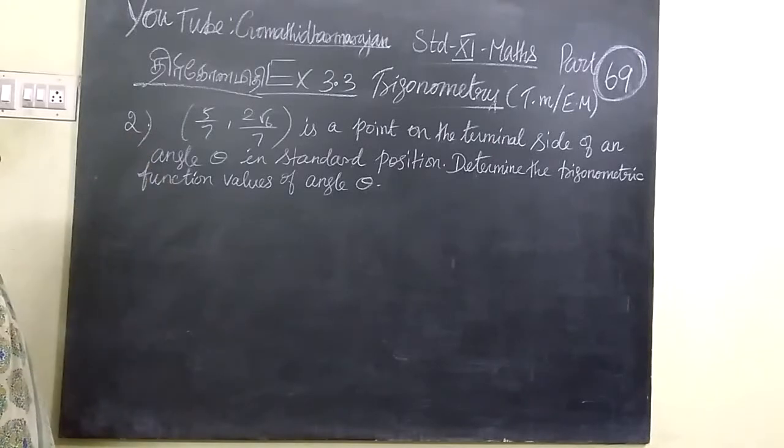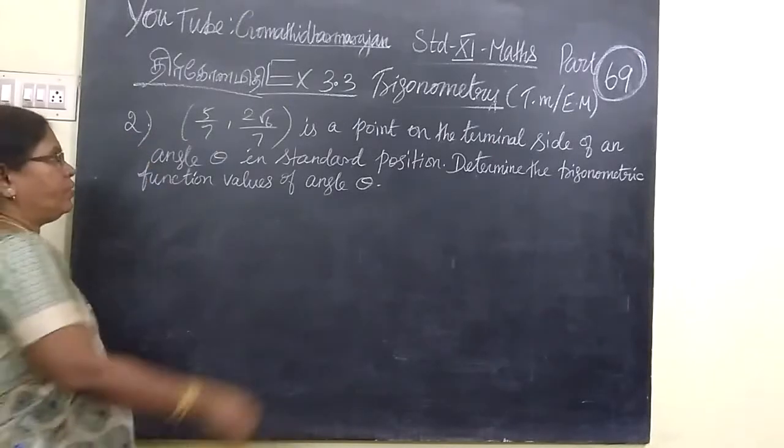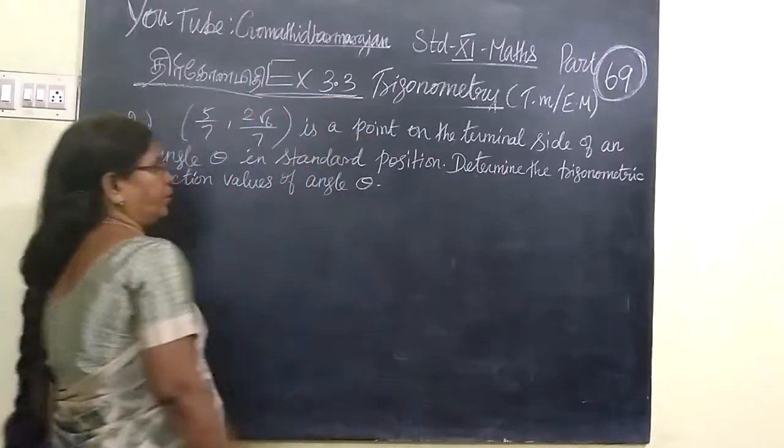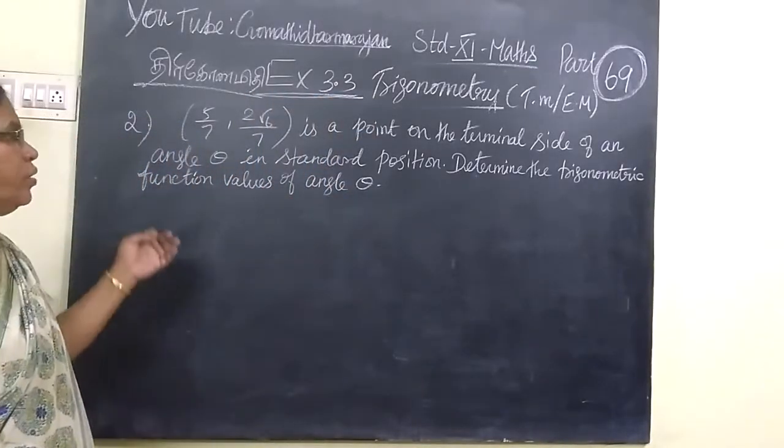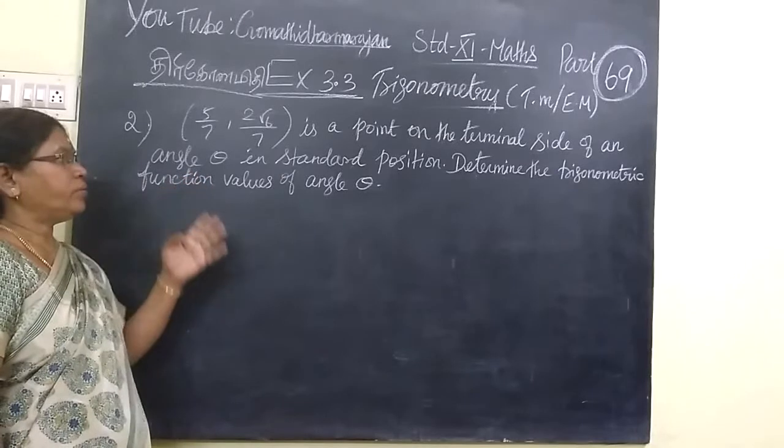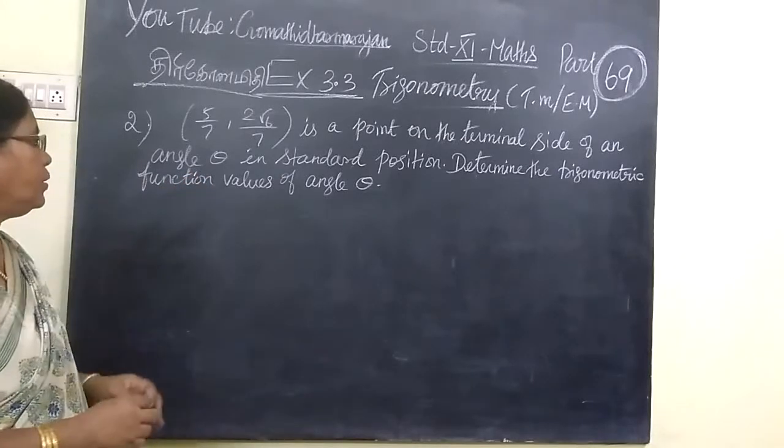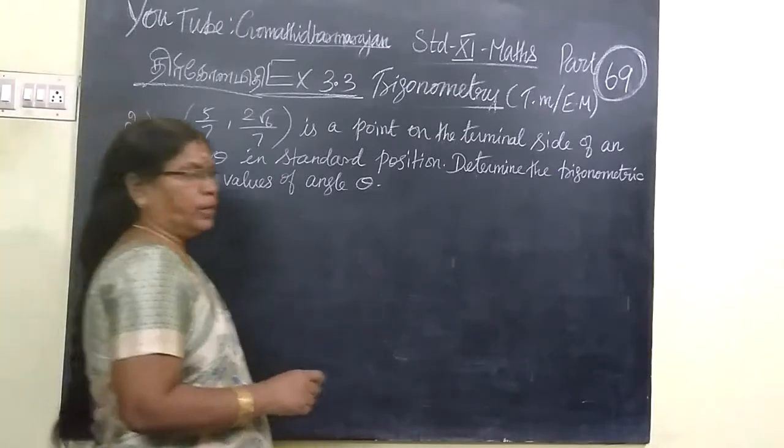Second question, 5 by 7 to 2 root 6 by 7. We are seeing exercise 3.3. It is a point on the terminal side of an angle theta in standard position. Determine the trigonometric function values of the angle theta.